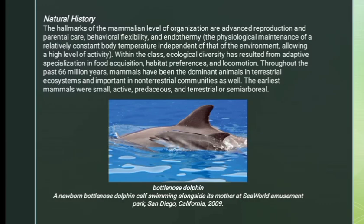Natural History: The hallmarks of the mammalian level of organization are advanced reproduction and parental care, behavioral flexibility, and endothermy — the physiological maintenance of a relatively constant body temperature independent of the environment, allowing a high level of activity. Within the class, ecological diversity has resulted from adaptive specialization in food acquisition, habitat preference, and locomotion.